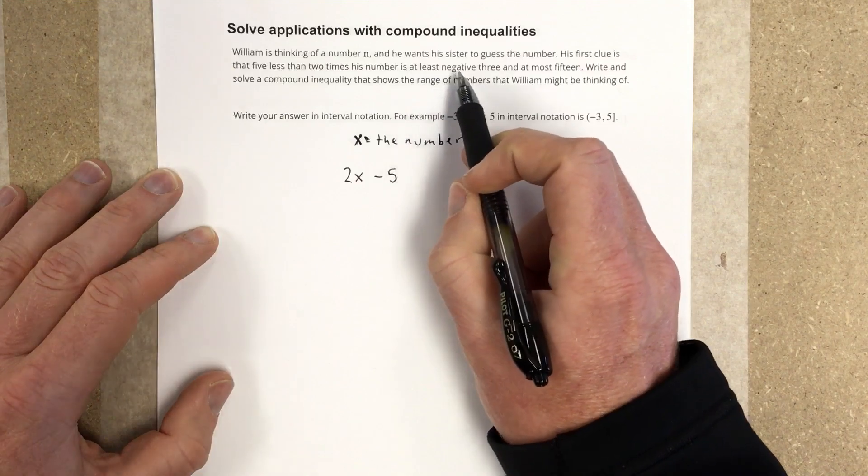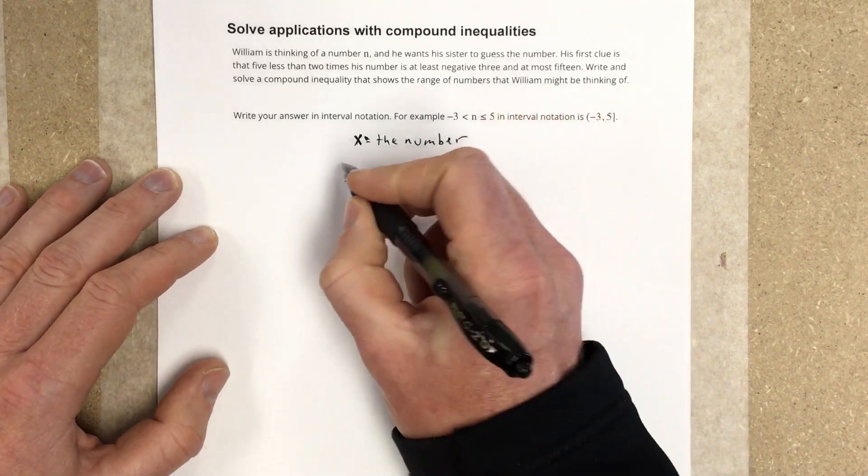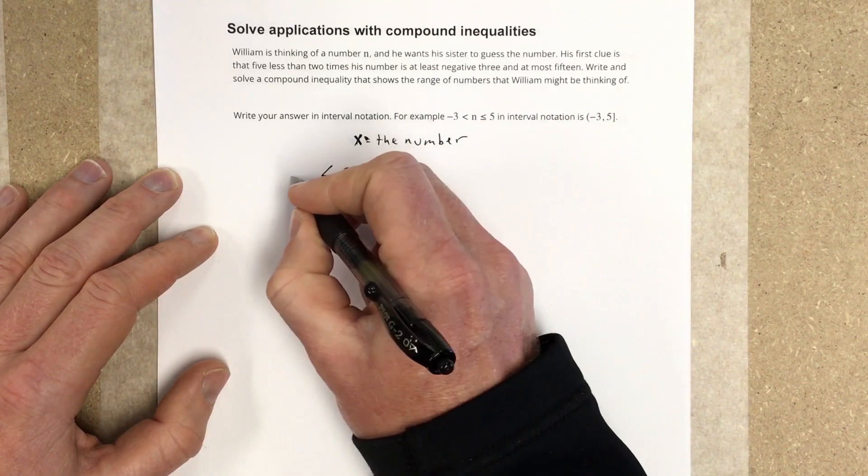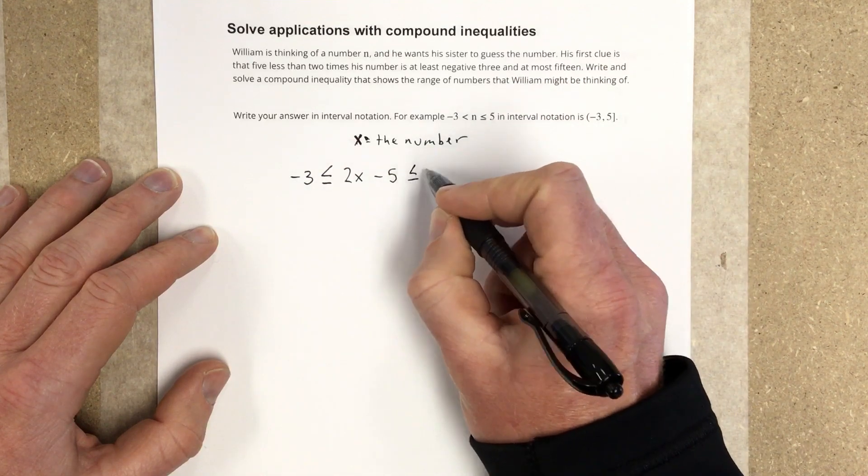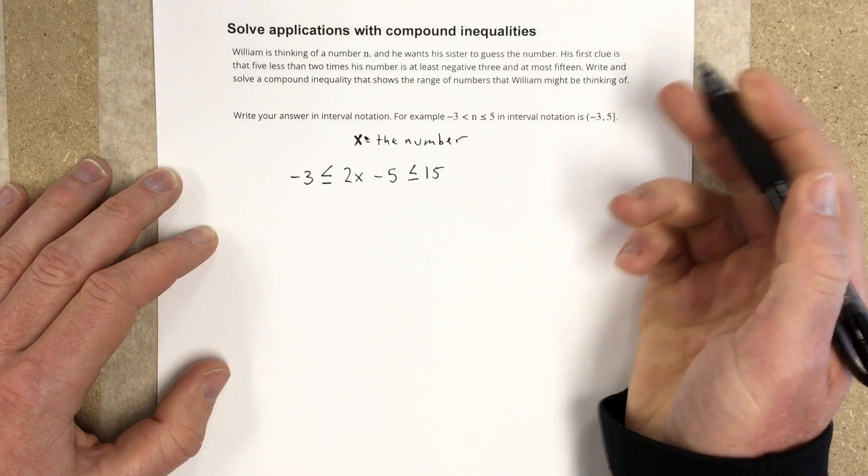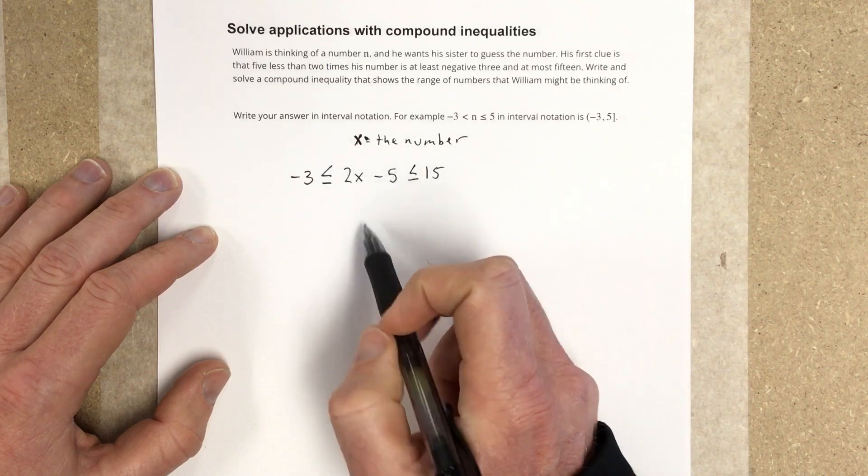They say it is at least negative 3, so that means greater than or equal to negative 3, and at most 15, which means less than or equal to 15. That's our compound inequality for this problem.